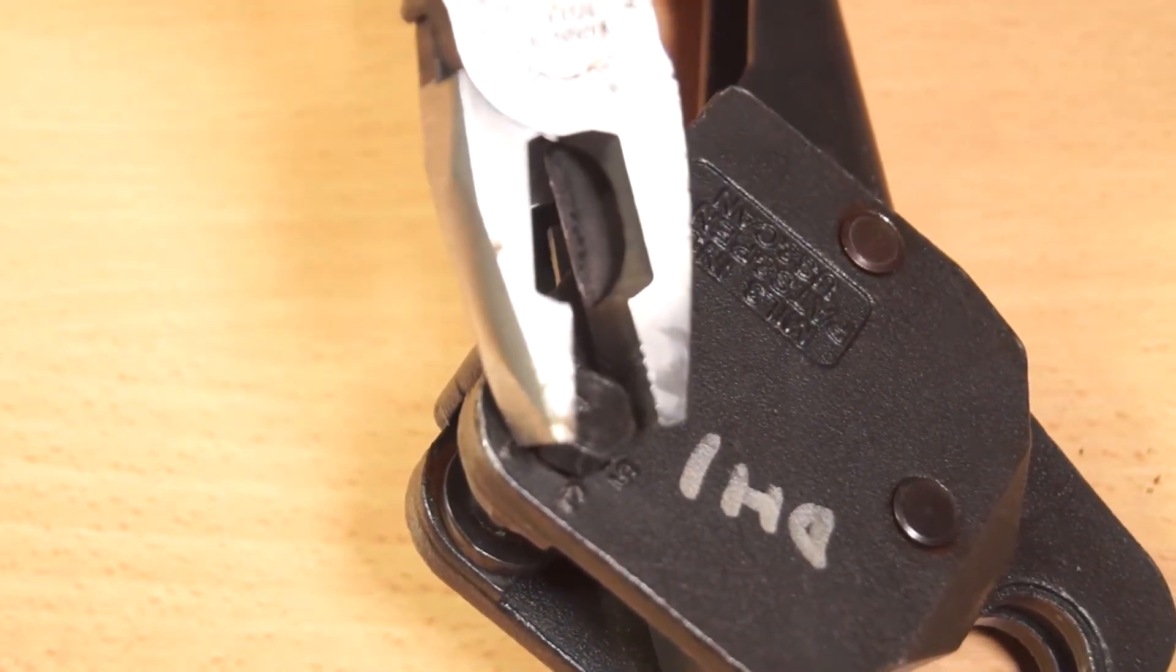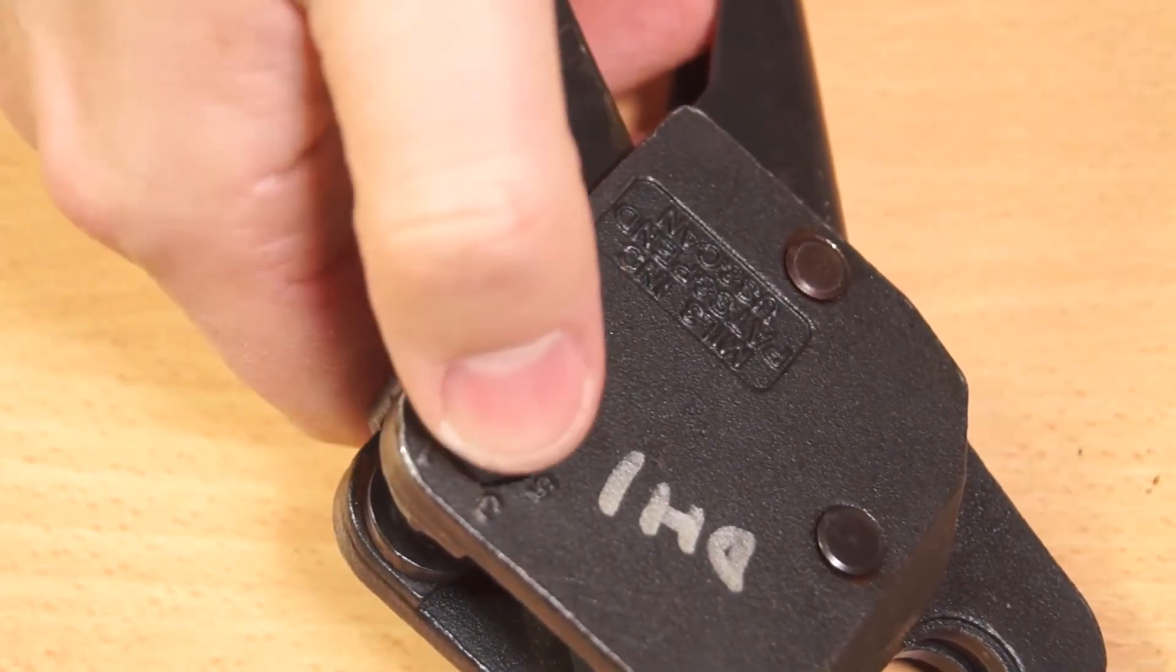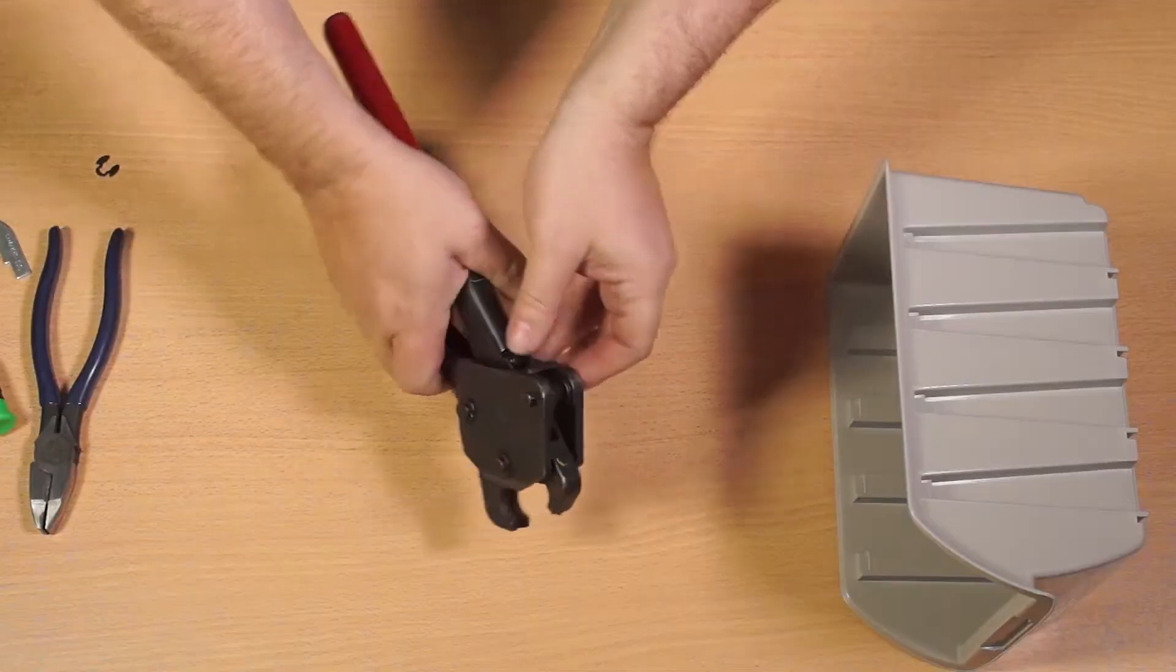Rotate the adjustment pin until the line on the hex head points to the next highest number on the tool body. Push the pin back in and replace the E-clip.